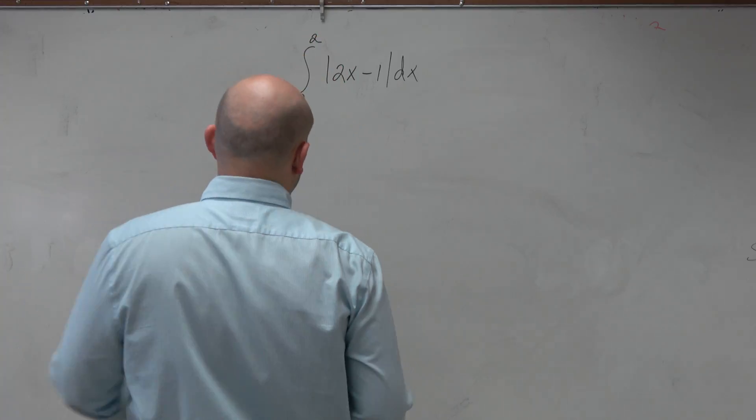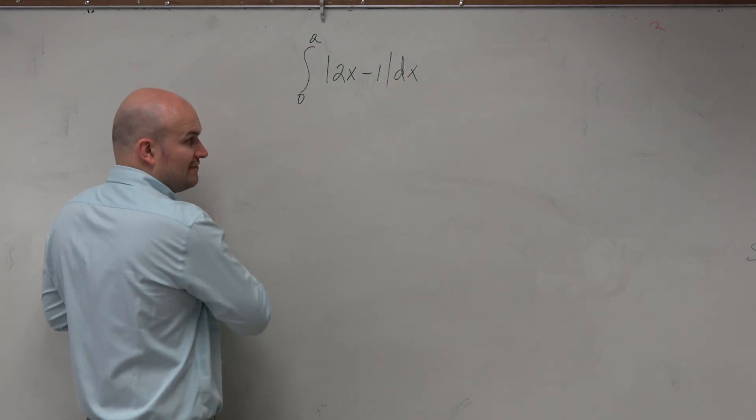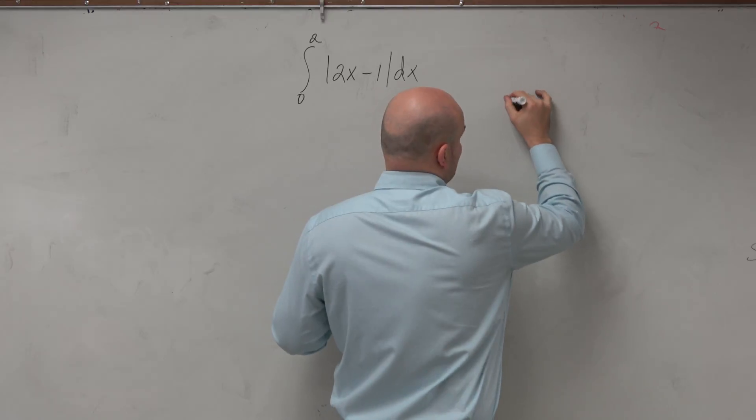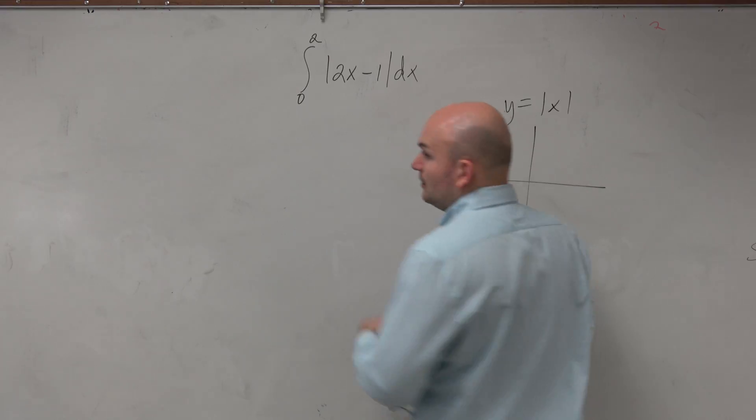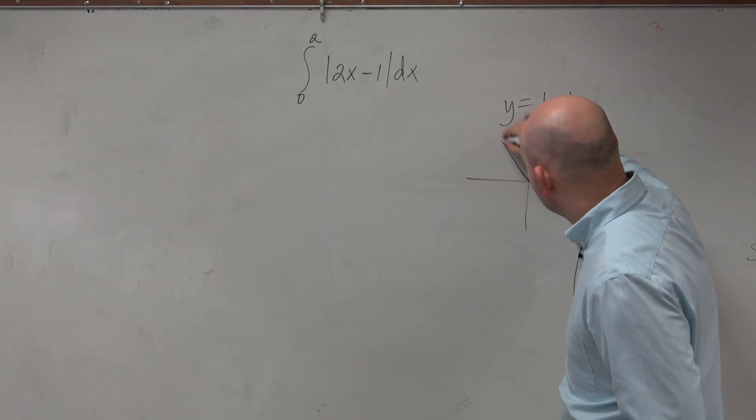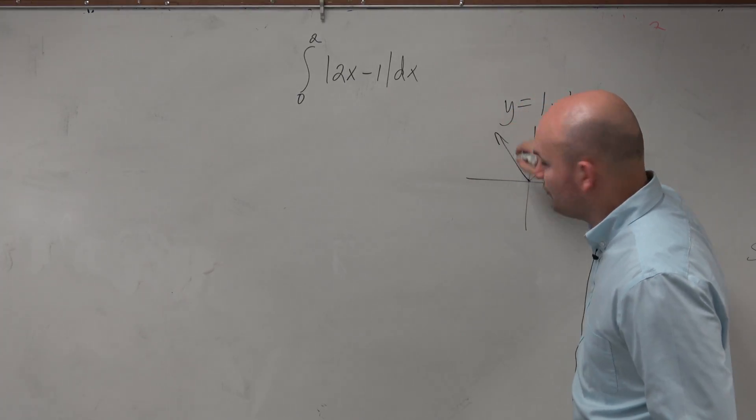So if we want to figure out what's happening with this graph, we need to at least know what the absolute value graph looks like. The absolute value graph has a vertex here, slope of 1, slope of negative 1.